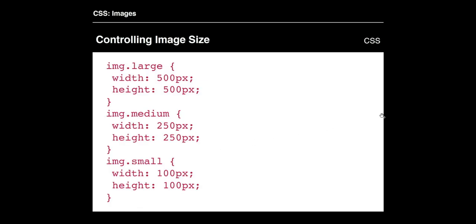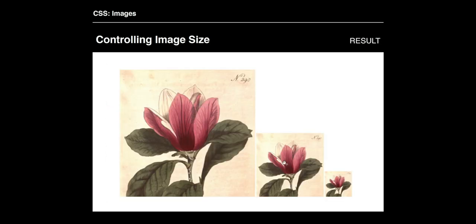With images, you can control the style using CSS. It's better to do that in CSS for consistency and easier updates. Here we have an image tag with three classes: large, medium, and small. We're just changing the size of the image to be 500x500 pixels, 250x250 pixels, and 100x100 pixels respectively. If you apply any one of those classes — large, medium, or small — to an image tag in your HTML, you'll get those sizes applied to that particular image.